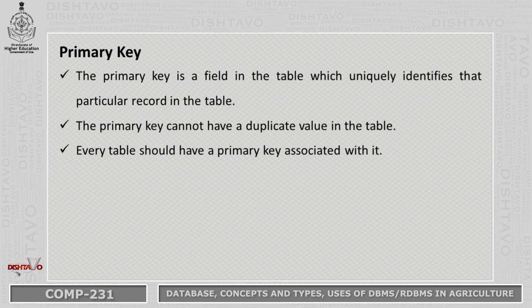Next is the primary key. It is the field in a table which uniquely identifies that particular record. The primary key cannot have a duplicate value in the table — it is only a unique value. Every table should have a primary key associated with it.